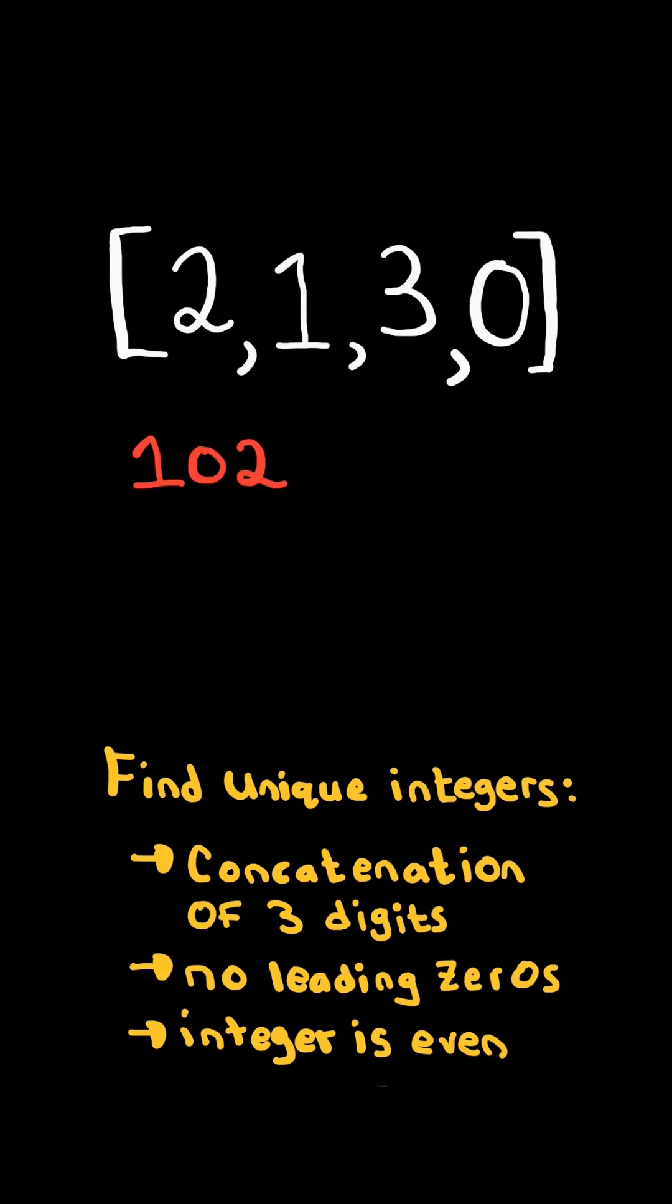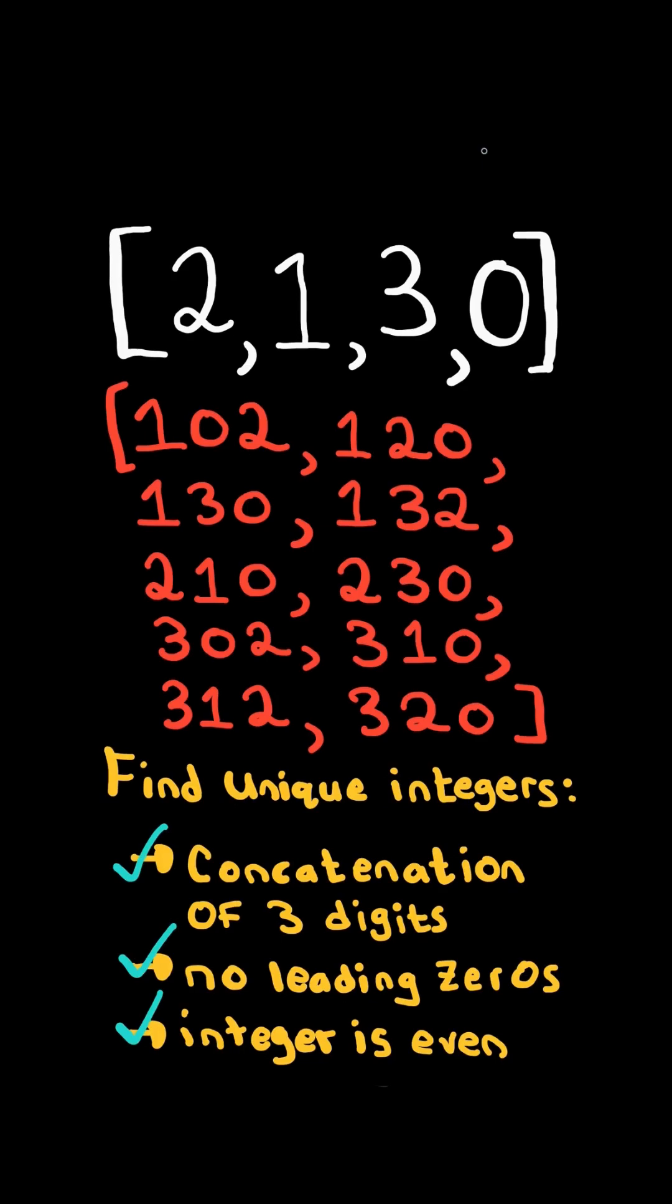For example, we can create 102 since it satisfies all the properties. All the integers that can be created are as follows. Return a list sorted in increasing order.